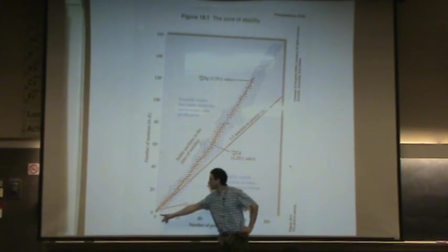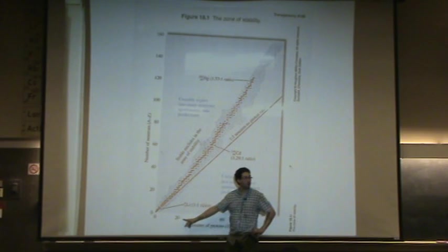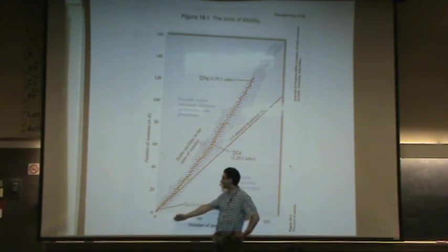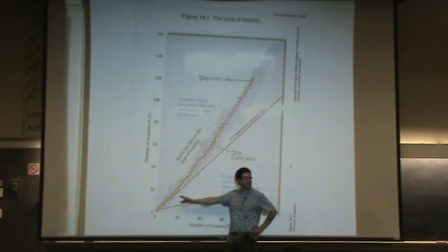When you have a small nucleus going from about 0 to 20, so what's 20? Calcium. Cool. Calcium. Yes. So you're following the line y equals x.